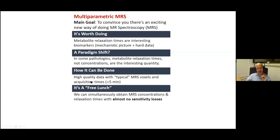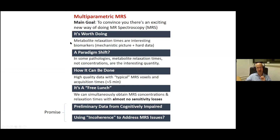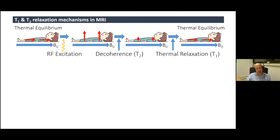I'll show that you can get this additional information — T1 and T2 for all metabolites — without almost any price in sensitivity or SNR per unit time, a kind of free lunch. I'll show high-quality data from typical voxel sizes and acquisition times, share preliminary data from a cohort of cognitively impaired elderly patients, and discuss how this method can address some technical issues in spectroscopy.